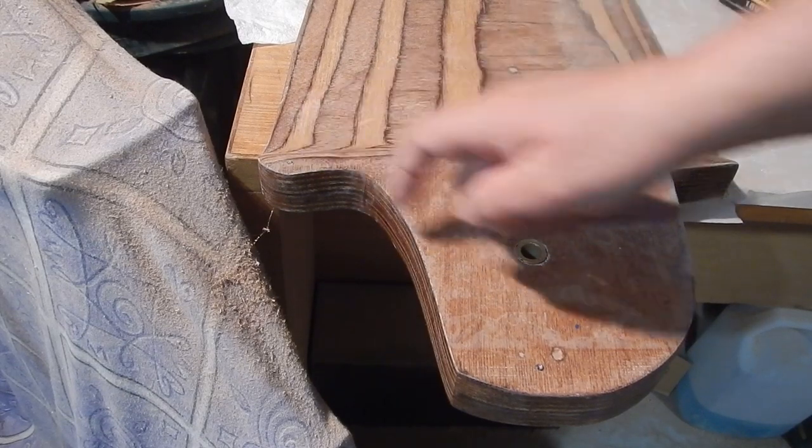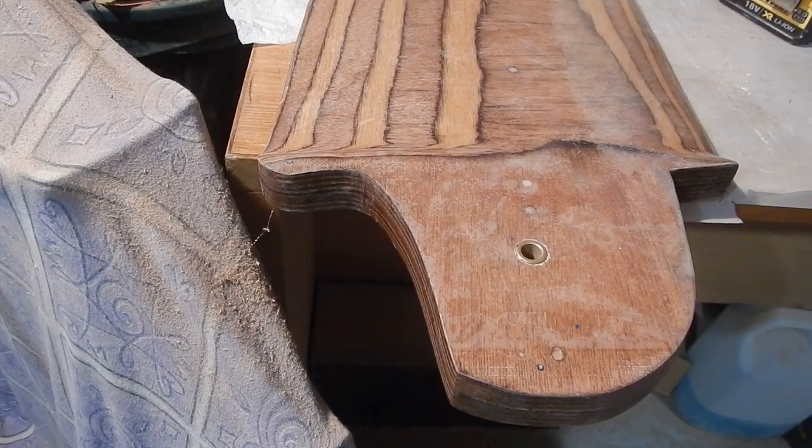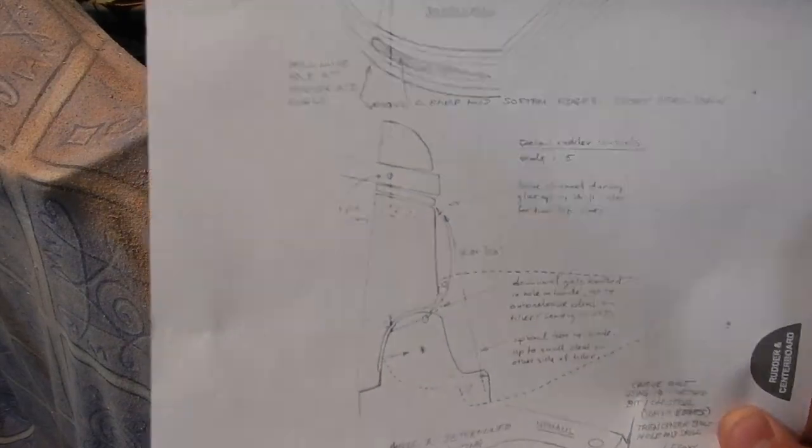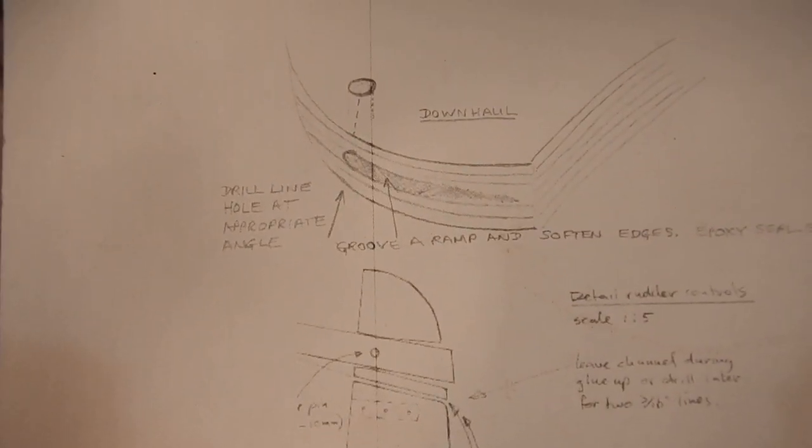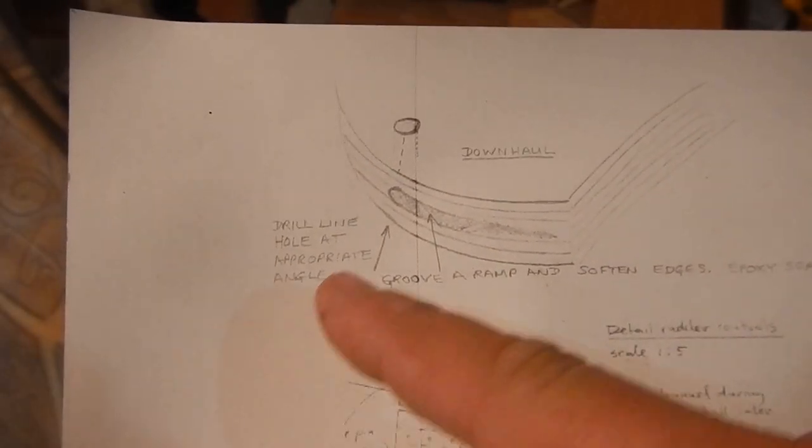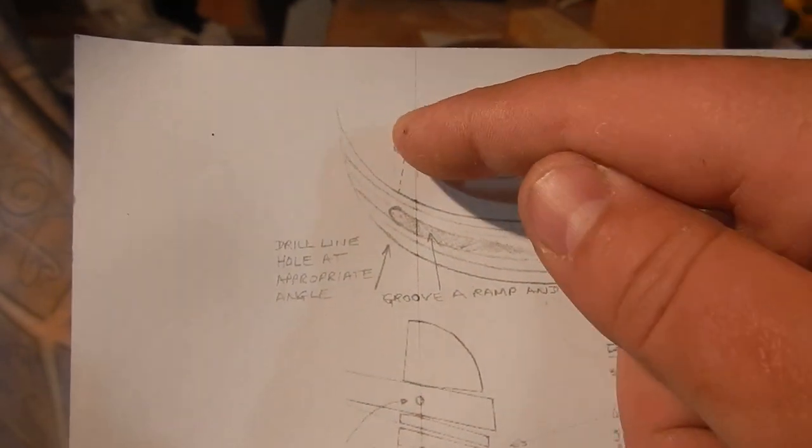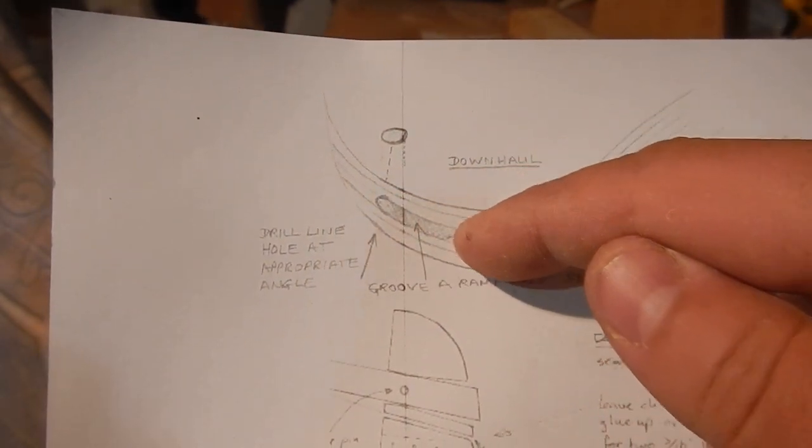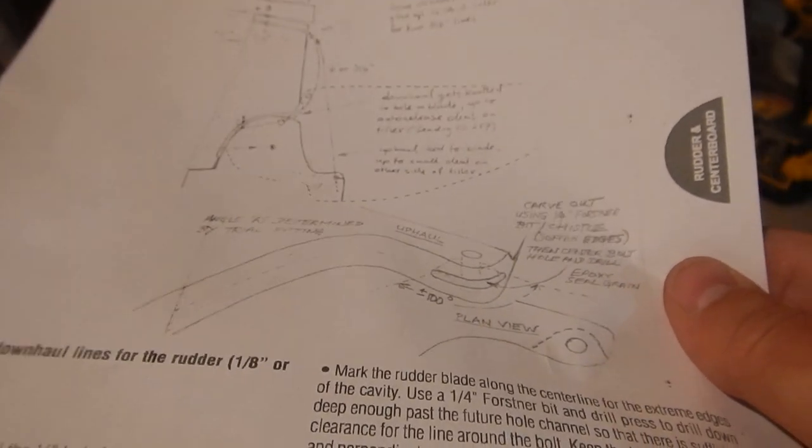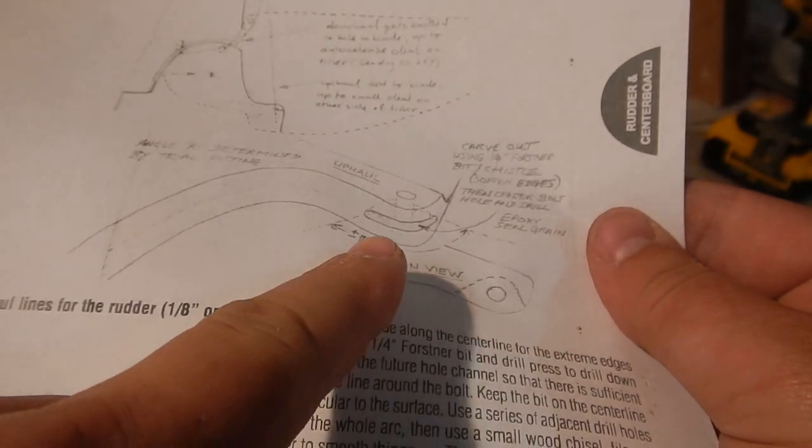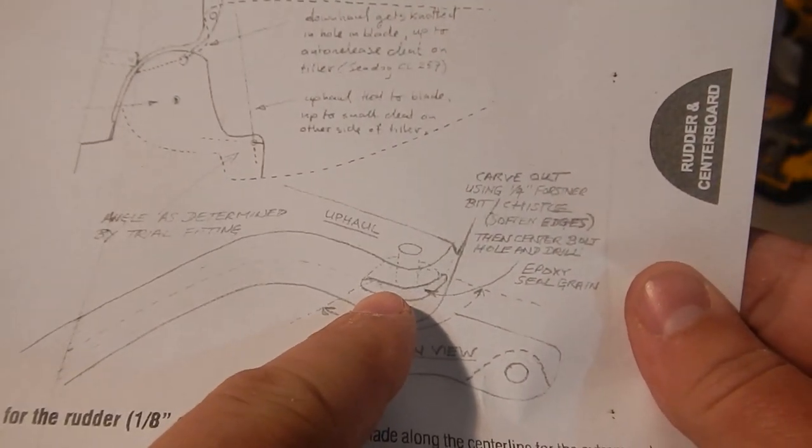This hole here is for the uphaul and this hole here is for the downhaul. Just got to examine how they work and drill a hole at appropriate angle. So does that mean that the downhaul is supposed to come through into this groove, or is it supposed to be like the uphaul here and have some sort of pin going through? Well that's just the mystery, isn't it?